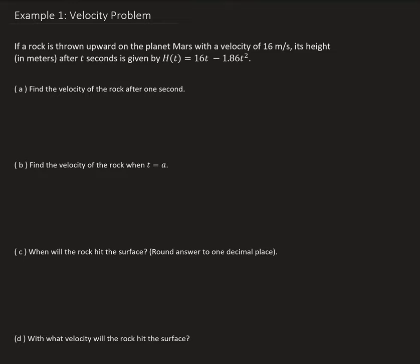In this example, we are going to look at the following velocity problem. If a rocket is thrown upward on the planet Mars with a velocity of 16 meters per second, its height, measured in meters after t seconds, is given by a parabolic function. The first question asks us to find the velocity of the rock after one second.